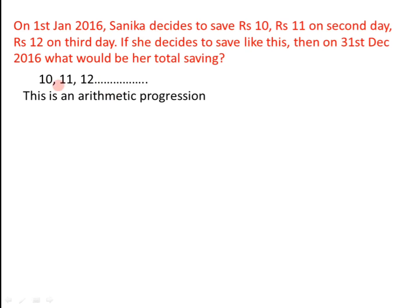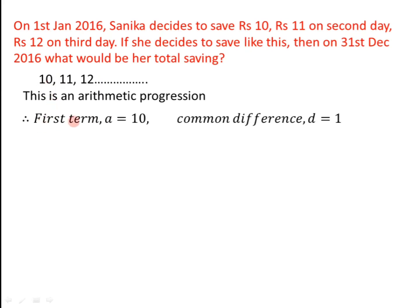Now, here as we can see, 10 is the first number. So we can take this as the first term, that's A. The first term, which is denoted by the letter A, is equal to 10. And the common difference — that is, the difference between any two consecutive numbers — is 1. So the common difference, denoted by the letter D, is 1 here.